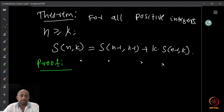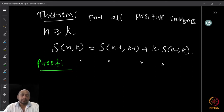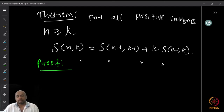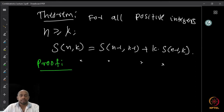So what we want to do is show the identity S(n,k) = S(n-1, k-1) + k·S(n-1, k). To do this, we find a bijection between the set of all partitions of an n-element set into k blocks and some other sets — a union of sets. So how do we do this?